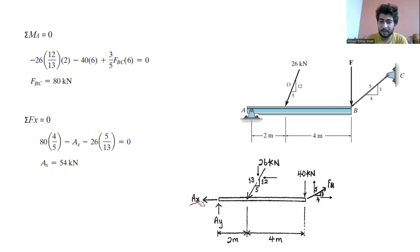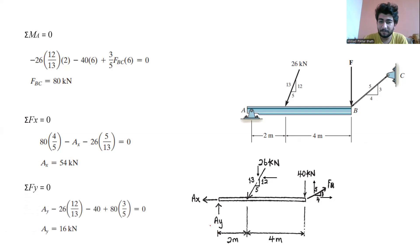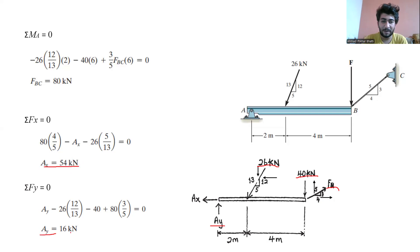Let's move to the y direction. In the y direction, we have Ay, and it is positive because it is moving in the upward direction. We have the negative 26 kN force because it is acting in the negative direction, and we have 12 over 30. We also have the 40 kN and it is also negative. And we have the positive 80 kN force because it is acting in the upward positive direction, so it is 3 over 5. We get the force in the y direction, which is 16 kN. So our first reaction force, Ax, is about 54 kN, and our second reaction force, Ay, is about 16 kN.